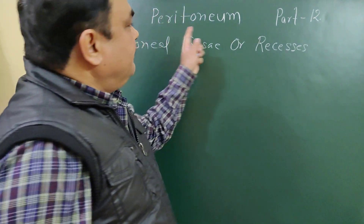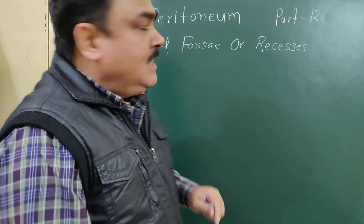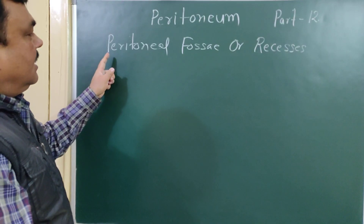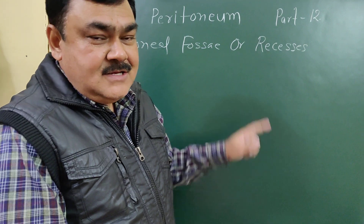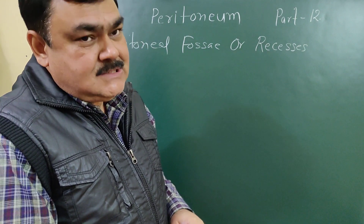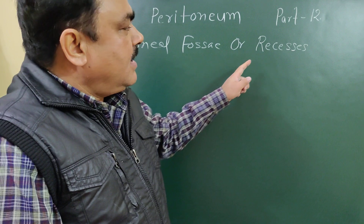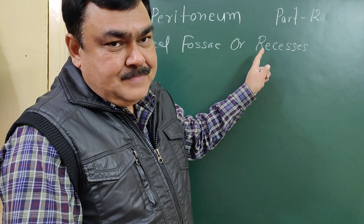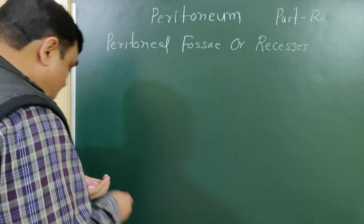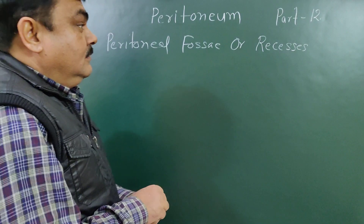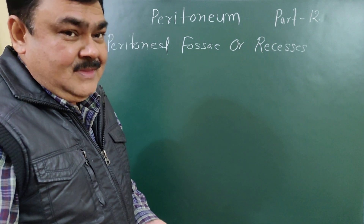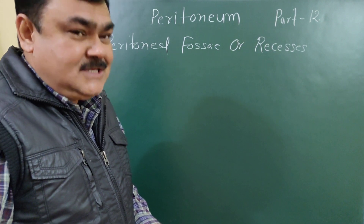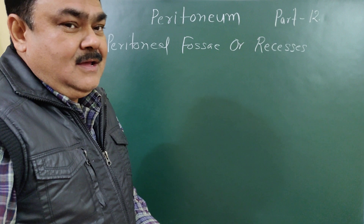We'll discuss about the peritoneum, part 12. In this part, we'll discuss about the peritoneal folds and recesses. These are clinically important recesses — sometimes internal herniations take place through these recesses. One recess is the lesser sac, which is the largest recess and will be discussed further.